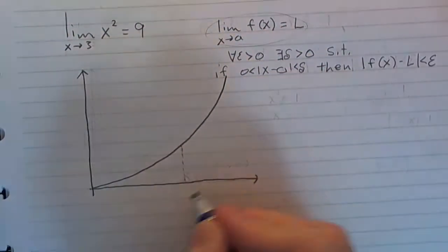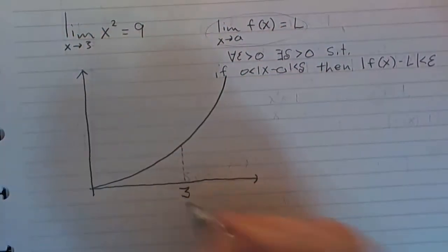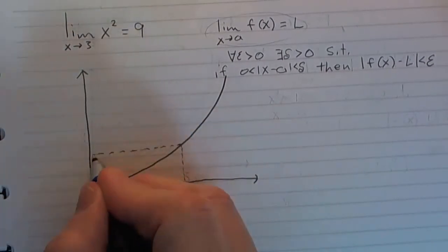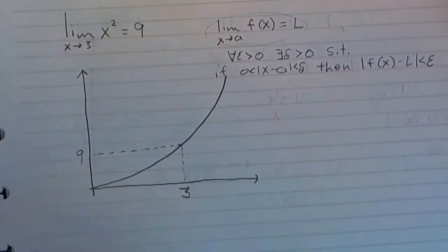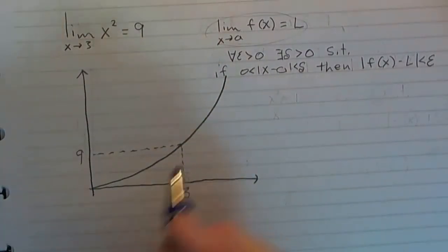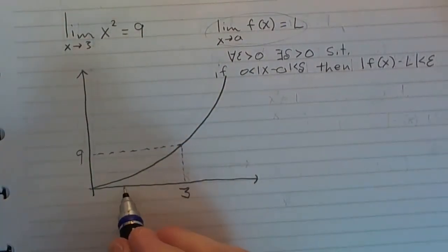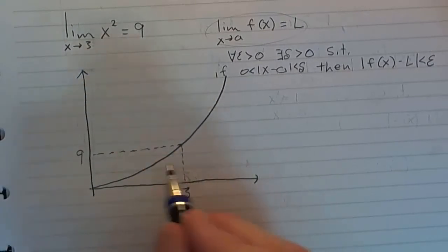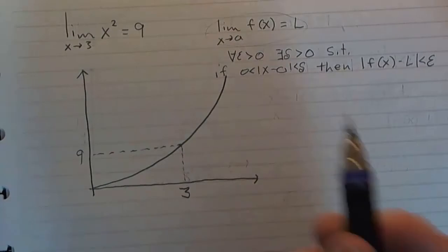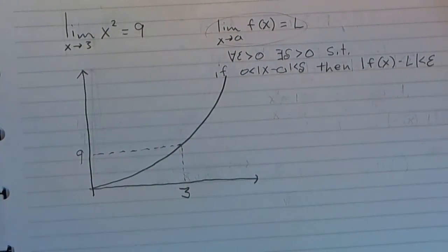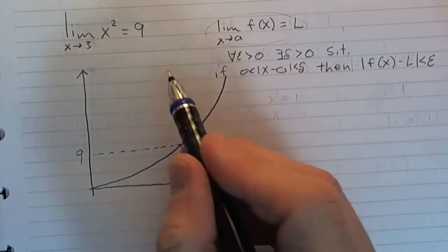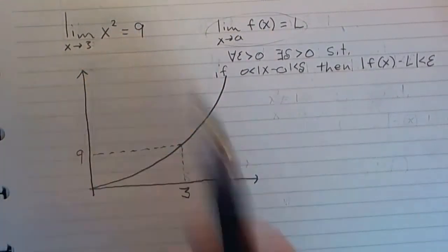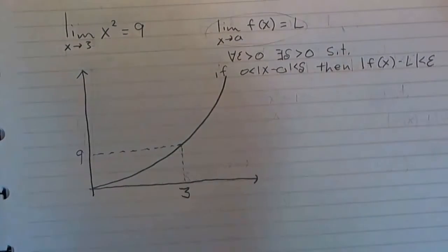We've got our graph, and here is 3, and of course that lines up on the y-axis with 9. So we know that as we approach from the left and as we approach from the right, our limit is going to be 9. What I want to do is play around with this definition and see if we can confirm this limit, or at least give evidence to support it.